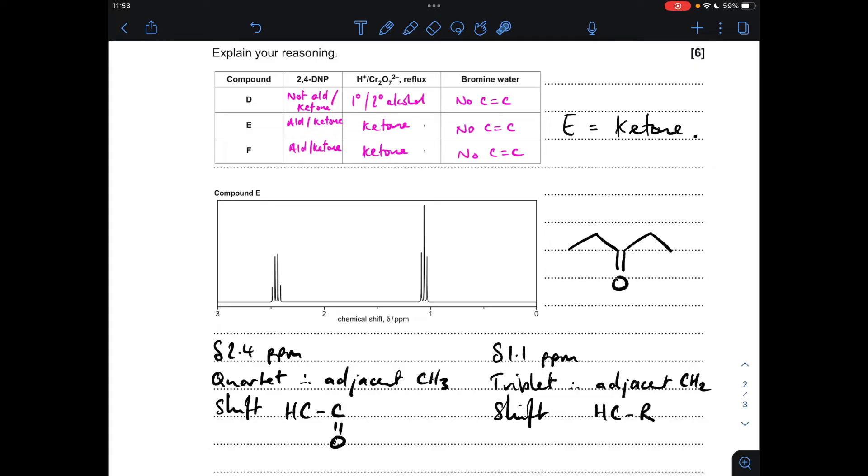And the only way to make the structure work is to make it pentan-3-one. So I'll just quickly explain that. So you've got equivalent CH3 groups at each end, you've got equivalent CH2 groups here and here. So if we deal with the CH3 groups, so they're going to occur as a triplet because they're adjacent to CH2s. They're in the H to C to R environment, so that's that information there, and that's the signal. The equivalent CH2 groups are adjacent to a CH3, so they're going to come out as a quartet, and they're in the H to C to C double bond O environment. So that's that signal there.